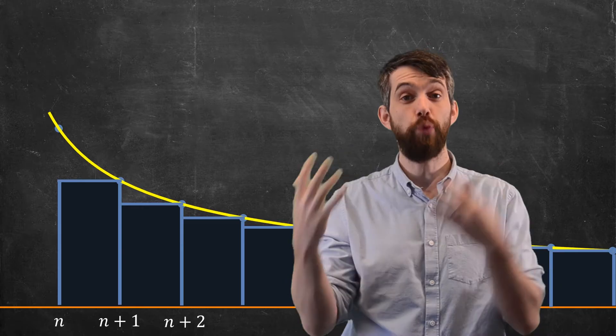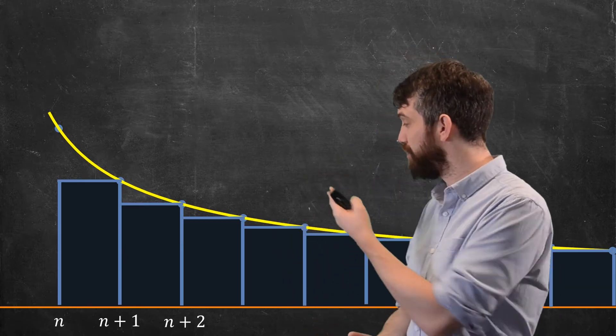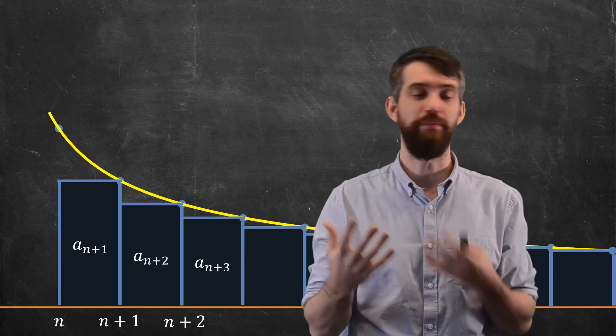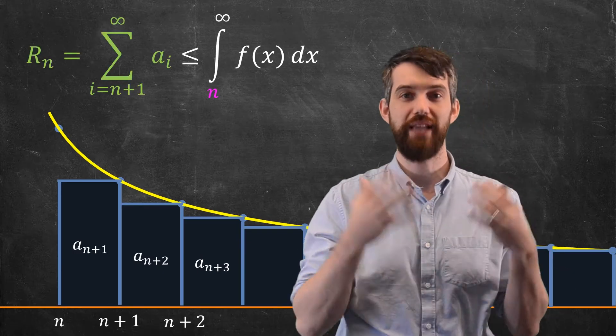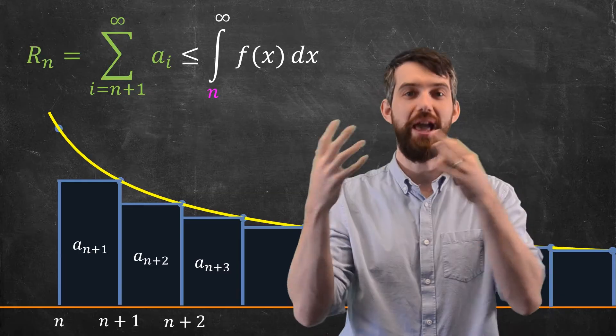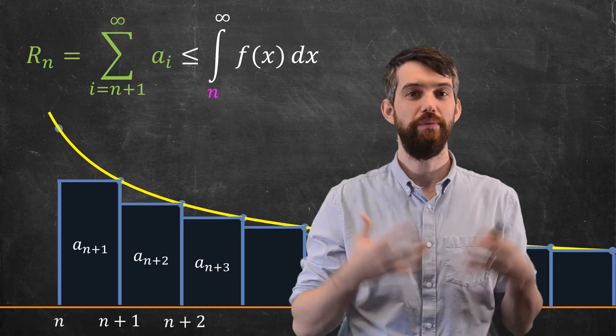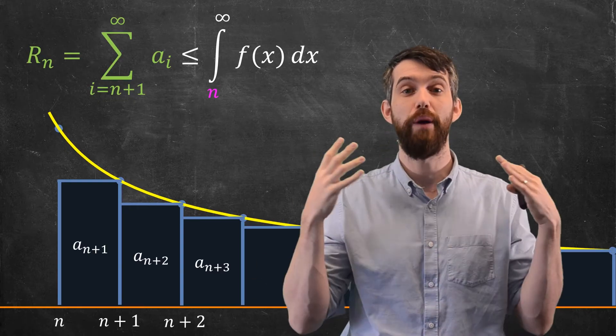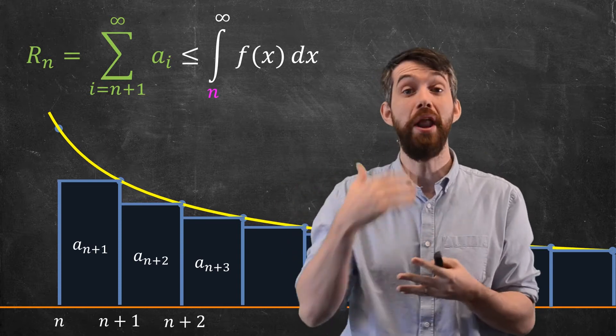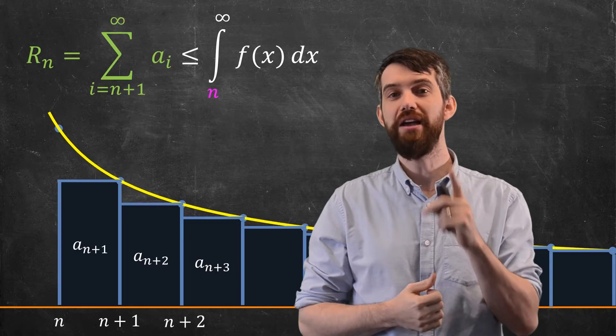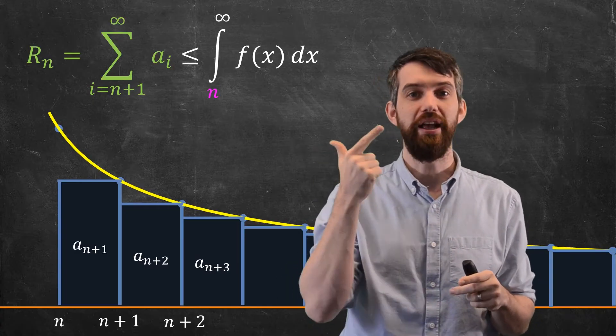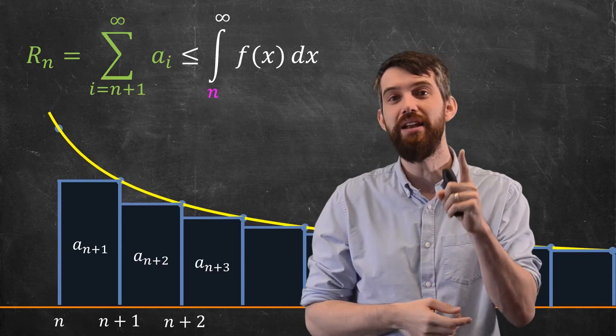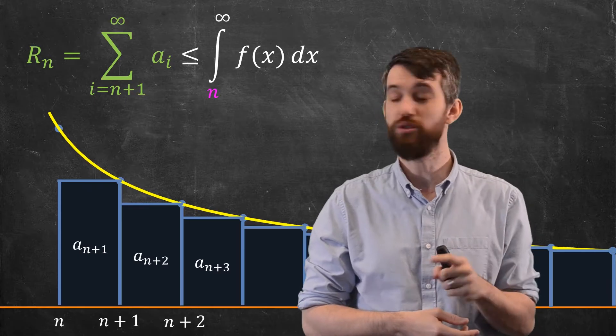For these rectangles, I'm going to use a right endpoint to define the height. So on the interval from n to n plus 1, the height is AN plus 1. The width is 1, so the area of the first rectangle is AN plus 1, the second is AN plus 2, AN plus 3, and so on. The remainder, which was the series from n plus 1 to infinity, equals the area of the rectangles. With this positive, decreasing, and continuous function, the area of the rectangles is less than the improper integral from n up to infinity.